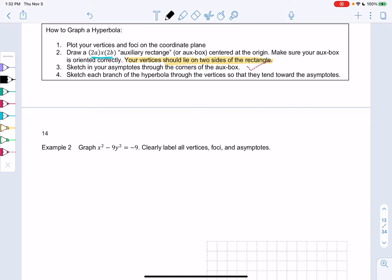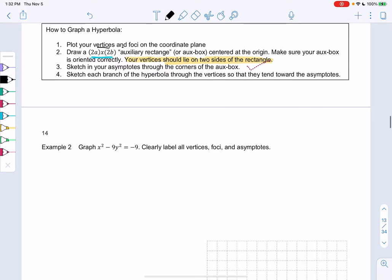So we're going to do the same thing. We're going to find the vertices and foci, and then we're going to draw that aux box and asymptotes, and then we can draw the hyperbola.